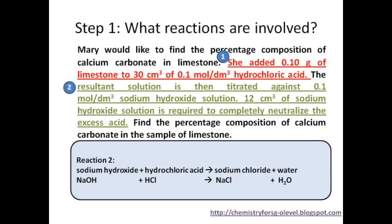Next, let's look at the question to see if there are other reactions involved. We see that the resultant solution is then titrated against 0.1 mol per dm³ sodium hydroxide solution. What reacts with sodium hydroxide? It should be the excess acid from reaction 1. You have learned that acid plus alkali gives salt plus water only. So let's write the reaction between sodium hydroxide and hydrochloric acid.